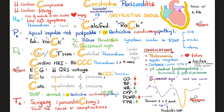The apical impulse is not palpable — a thick, calcified pericardium separates your fingers from the patient's apex. Causes to remember: tuberculosis, post-cardiac surgery, and post-radiation exposure.